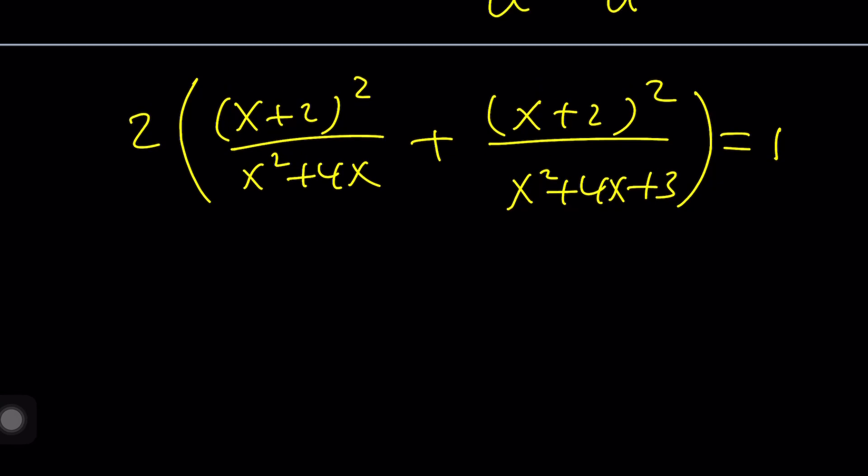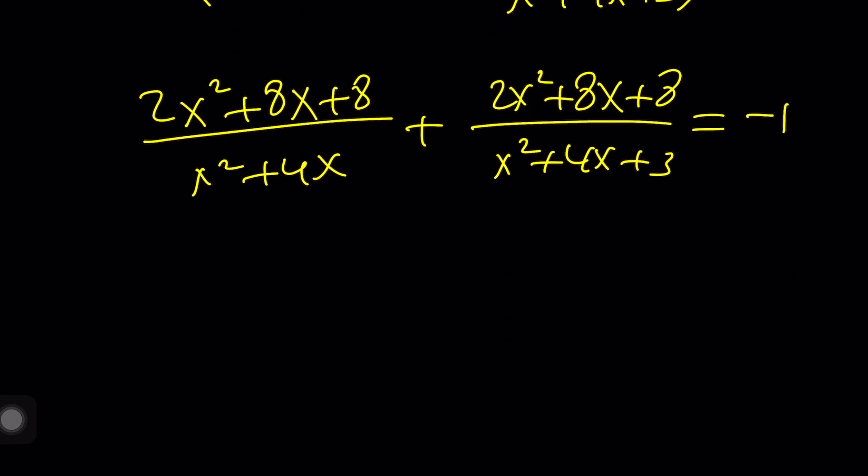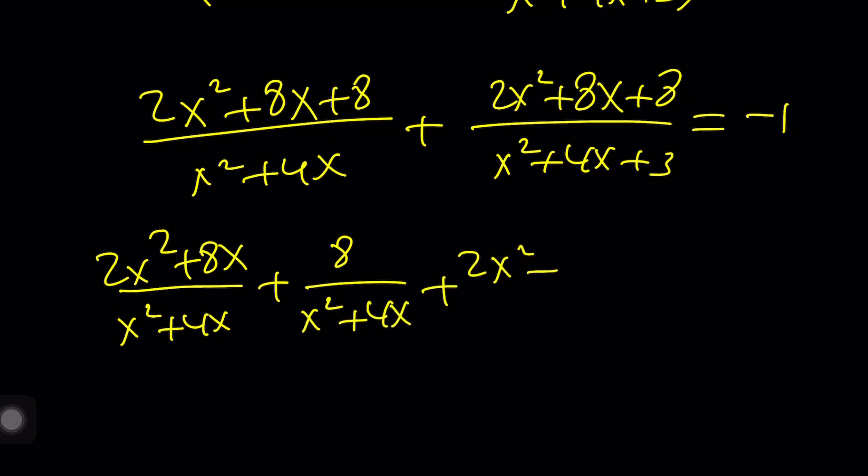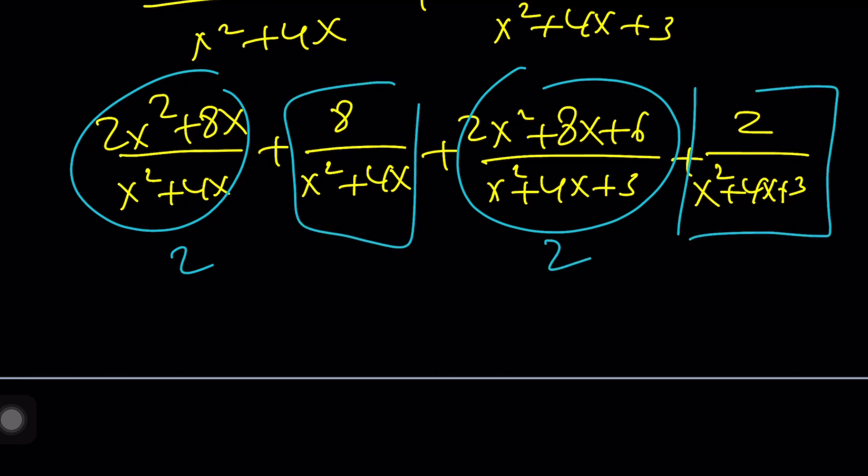You can go ahead and do a different hocus pocus here, because this is just nice. You can expand it and multiply by 2. So, that's going to give you 2x squared plus 8x plus 8, divided by x squared plus 4x. And then this is going to give you the same. 2x squared plus 8x plus 8, divided by x squared plus 4x plus 3, is equal to negative 1. And now, here's the coolest part. 2x squared plus 8x, divided by x squared plus 4x, and then plus 8 over x squared plus 4x. And then here, 2x squared plus 8x, plus 6 over x squared plus 4x plus 3, plus 2. I split up the 8 into 6 plus 2. You get the idea. And now, don't worry about the negative 1. This is going to be a 2. This is going to be a 2. And I have 4. Subtract 4. You're going to get negative 5. And you have these two sums. Use substitution and get to the results.